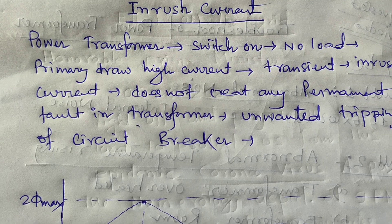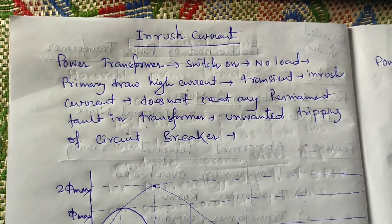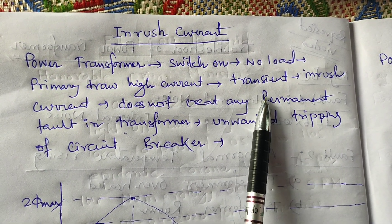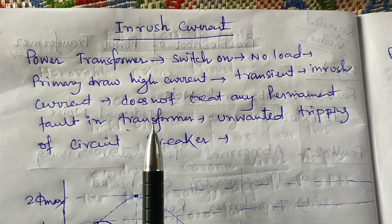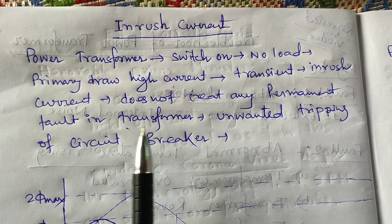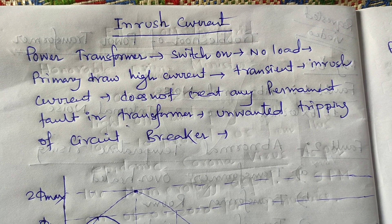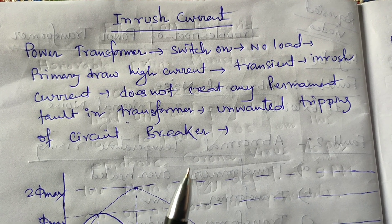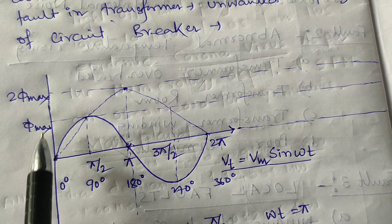When we switch on a power transformer at no-load condition, the high transient current that flows is the inrush current. This inrush current does not create any permanent fault in the transformer, but it may cause unwanted tripping of the circuit breaker. If the circuit breaker trips due to this large current, the transformer may be switched off accordingly.